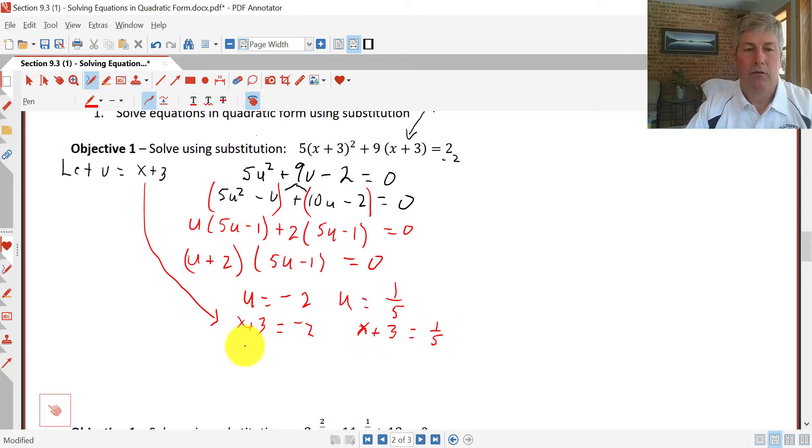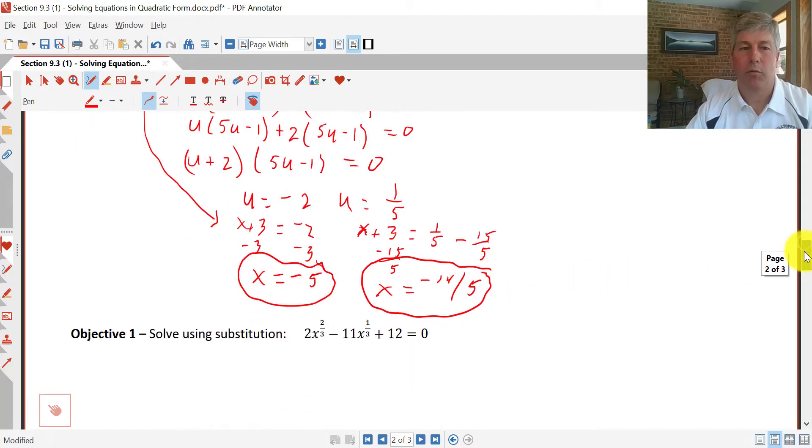We want to solve for x, so we have to subtract 3 from both sides. And we get x = -5. And we have to subtract 3 from both sides again. So I'm going to subtract 15/5, so I have a common denominator. And we get x = -14/5. So those are our two solutions, and we successfully navigated u-substitution in that first sample problem.